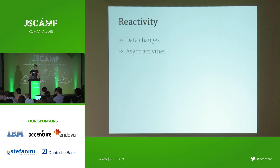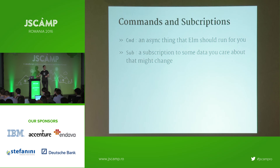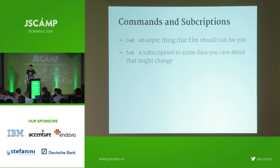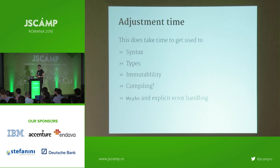Elm also has built-in reactivity. Data changes a lot in an application — HTTP requests and so on — and there are built-in types for dealing with this. Commands are asynchronous things Elm should run for you: you give Elm a command like 'fetch this data' and it goes off in the background. Subscriptions are for data you care about that might change — if you've got some data and want to know when it changes, you can subscribe to it. You often won't need subscriptions in a typical web application.